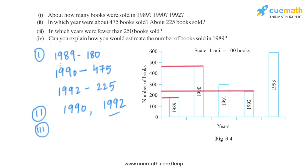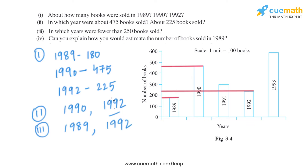Question 3 asks: in which years were fewer than 250 books sold? Looking at the graph, in 1989 around 180 books were sold, and in 1992 around 225 books were sold. So these are the two years in which fewer than 250 books were sold.